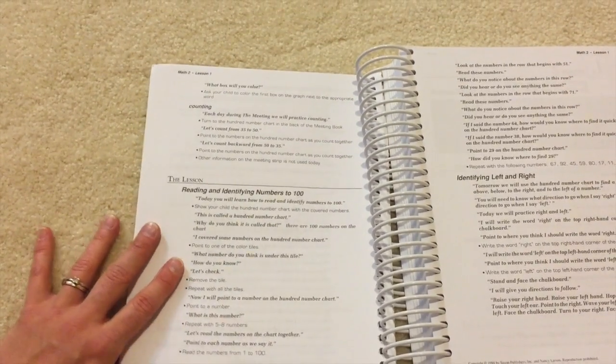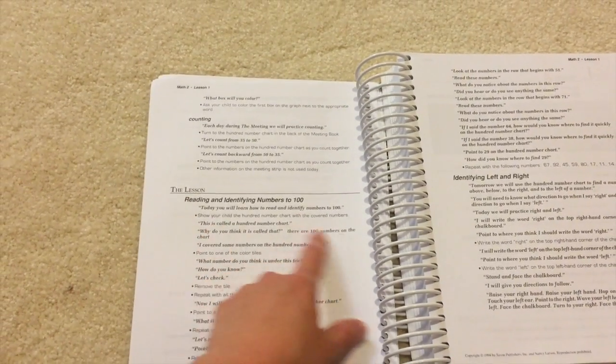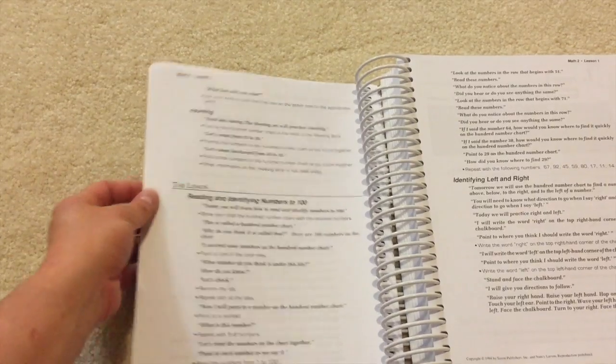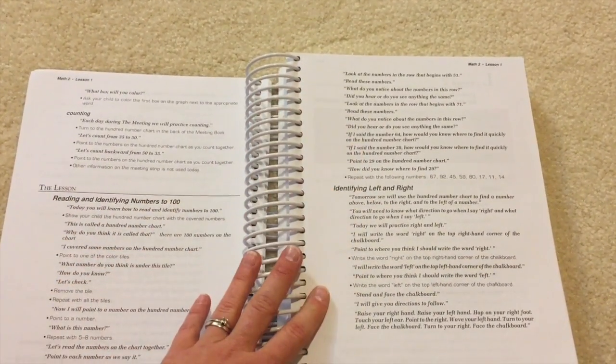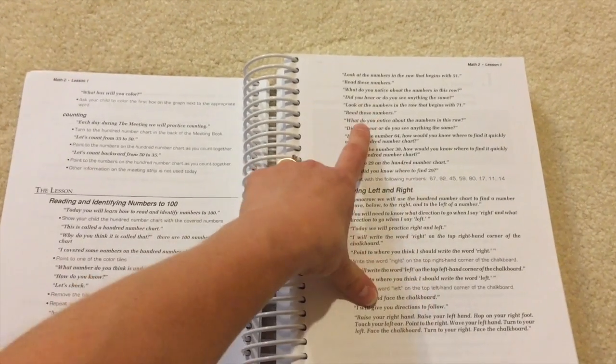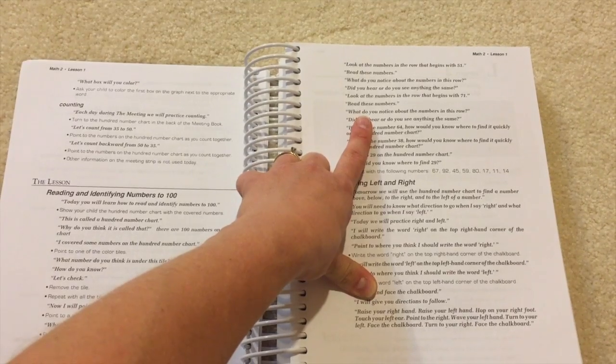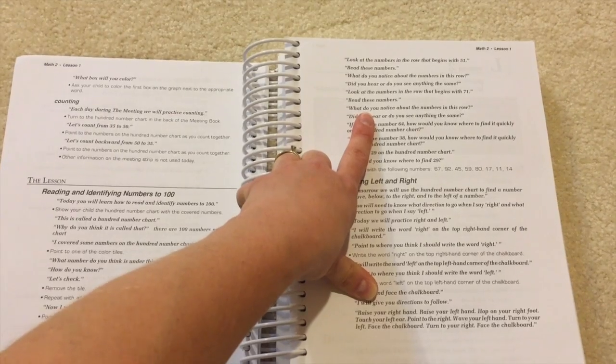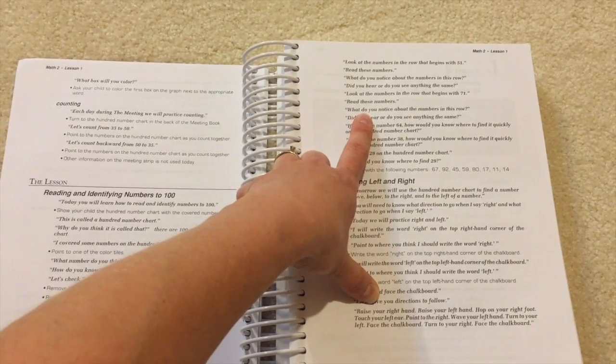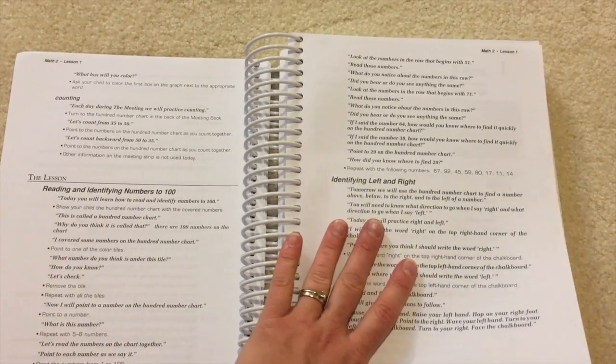And so you go through and it gives you what to read in bold and what to do in regular font. So I'm going to read all of this to Caitlin and she's going to respond to the questions. And I like the fact that they don't give you an explicit answer they're looking for out of the child. Because that really that can hinder me personally, if she's not responding in the way that I am like what the book expects her to respond. So that's really helpful.